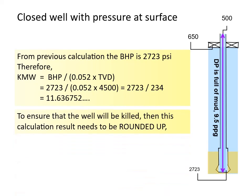To ensure that the well will be killed, then this calculation result needs to be rounded up. To round up, we ignore the second decimal and any other number after, but we need to add 0.1, so we will have 11.7 ppg.